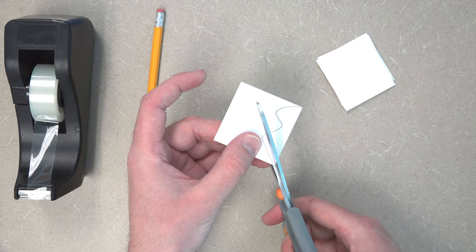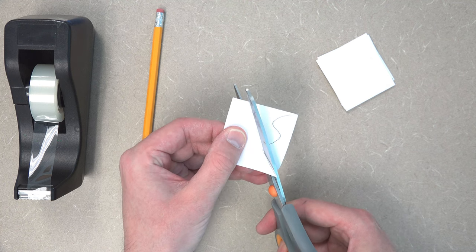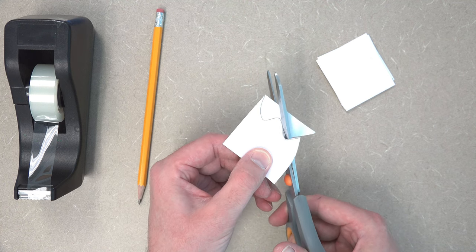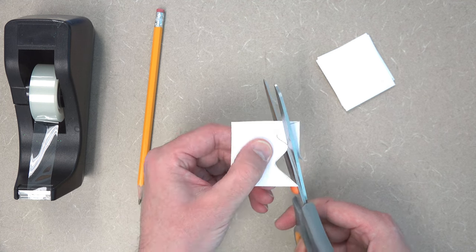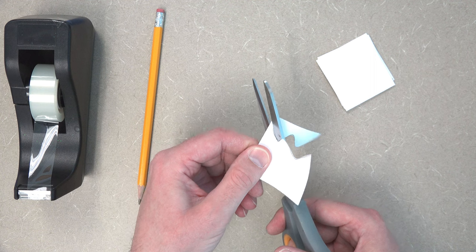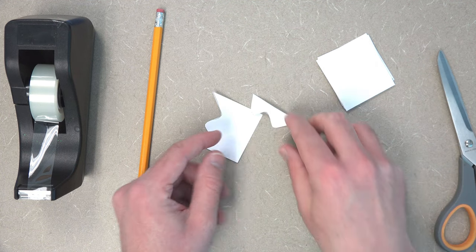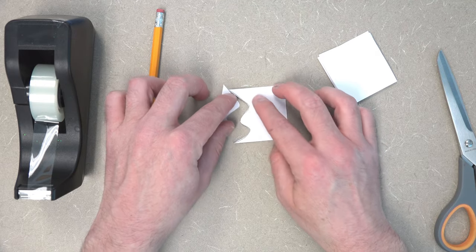We've got our design. We're going to carefully follow the line and just cut it out, starting from the corners of the square and ending on the corner of the square. That way, we get a nice repeating pattern like so.